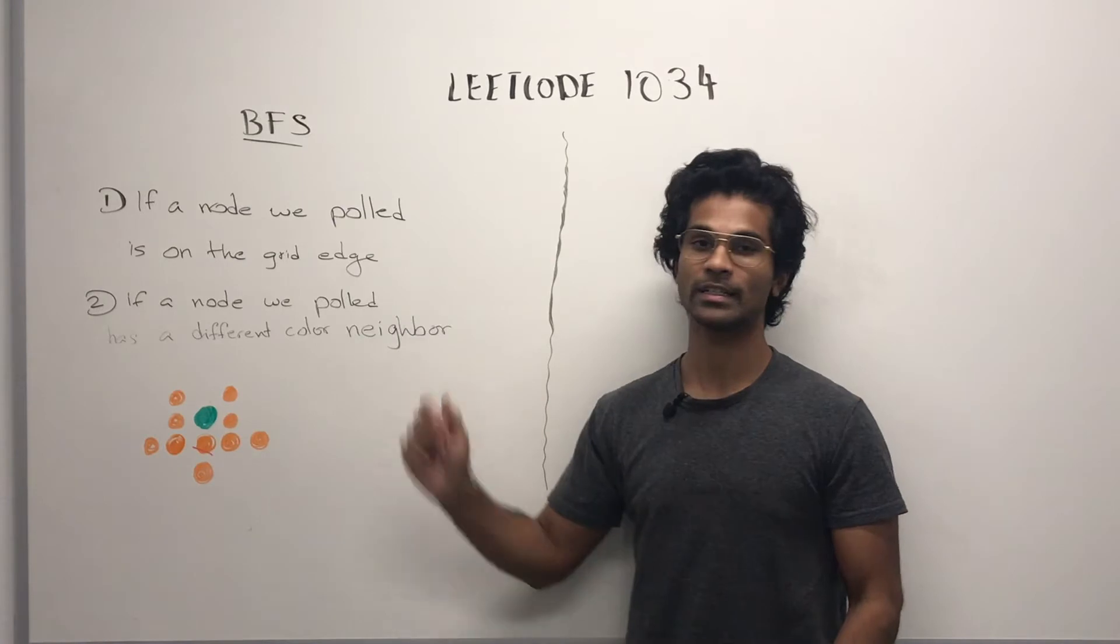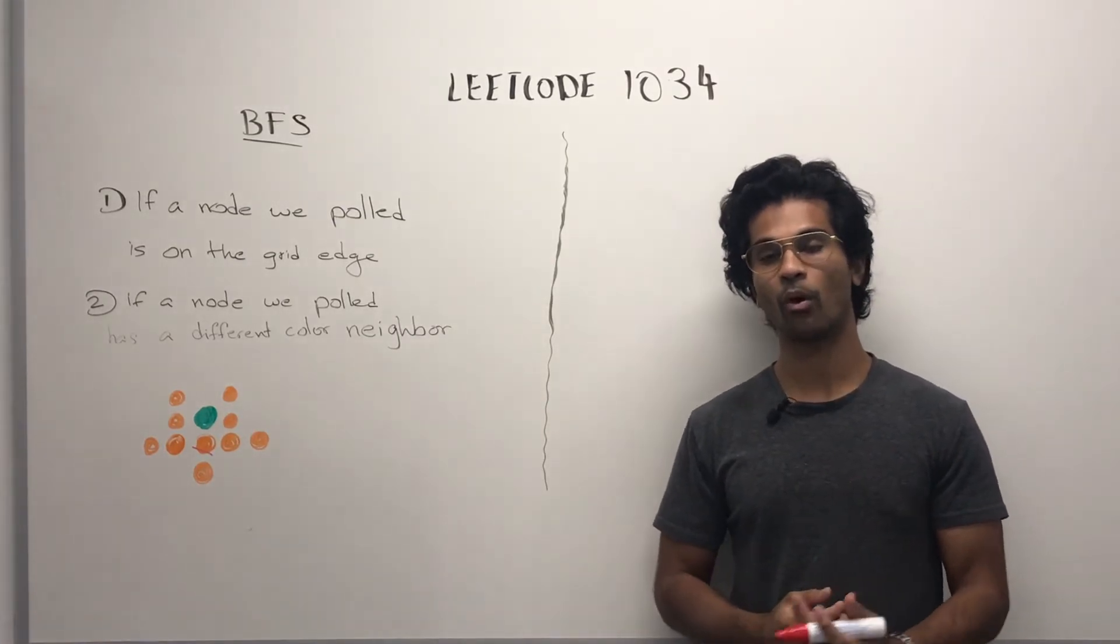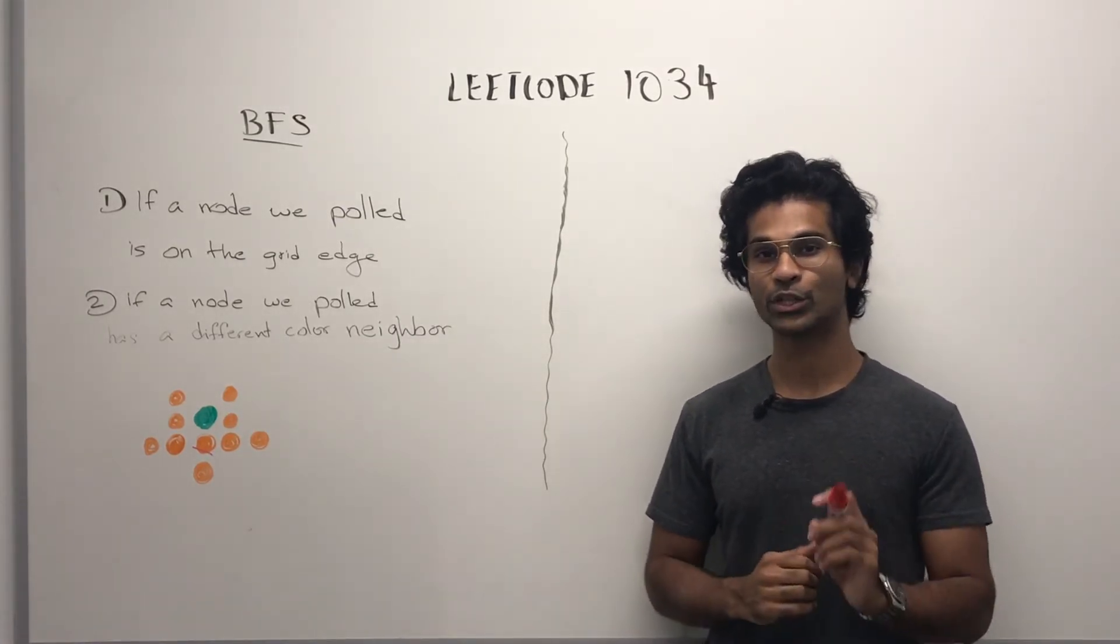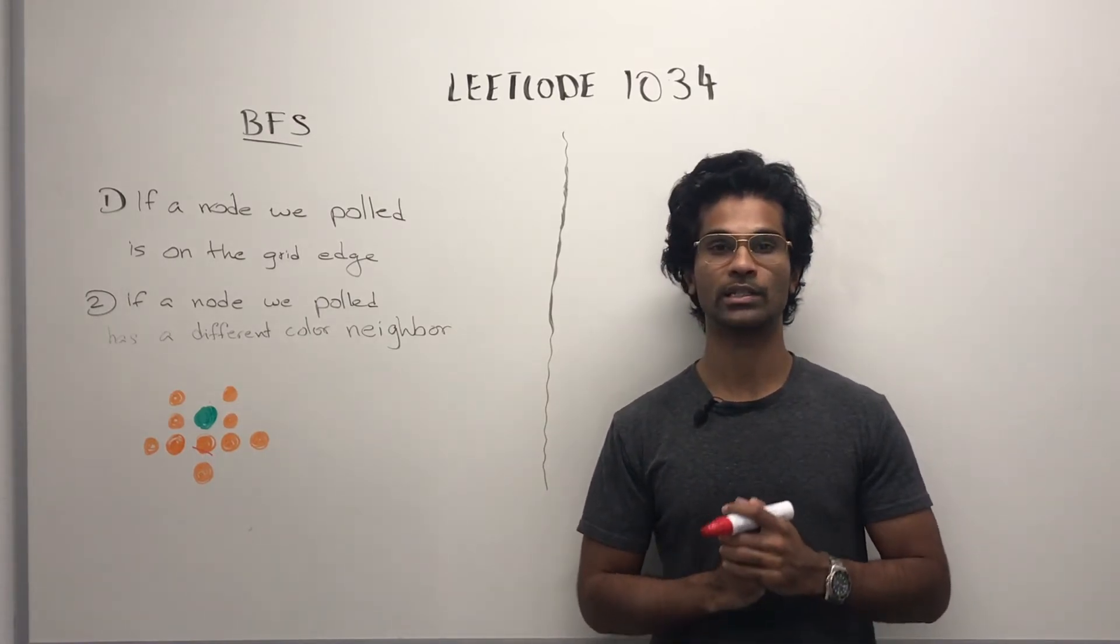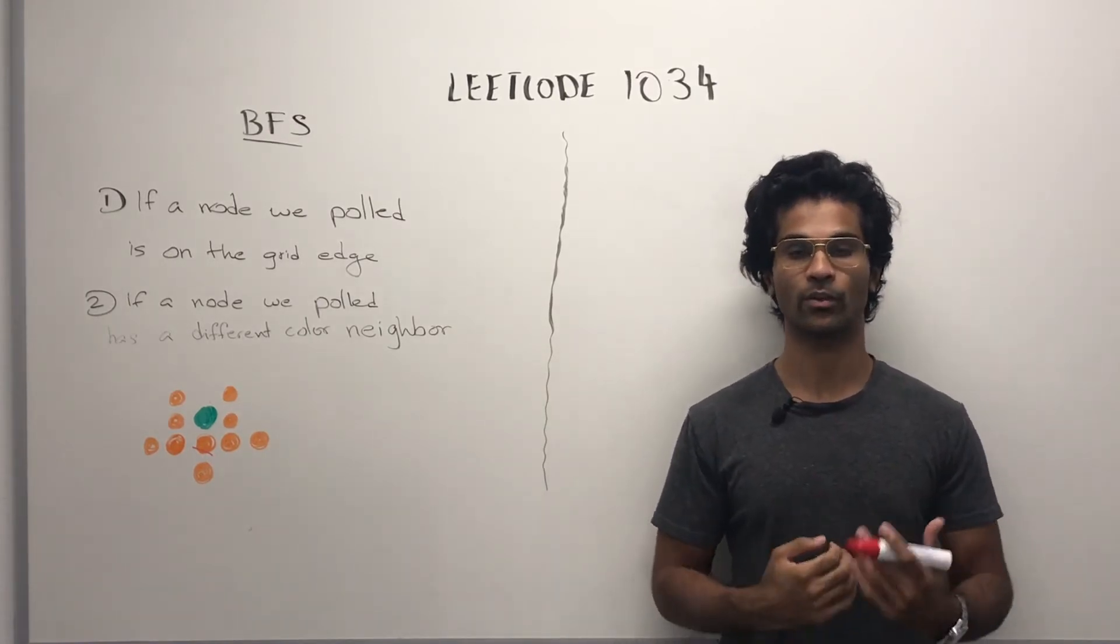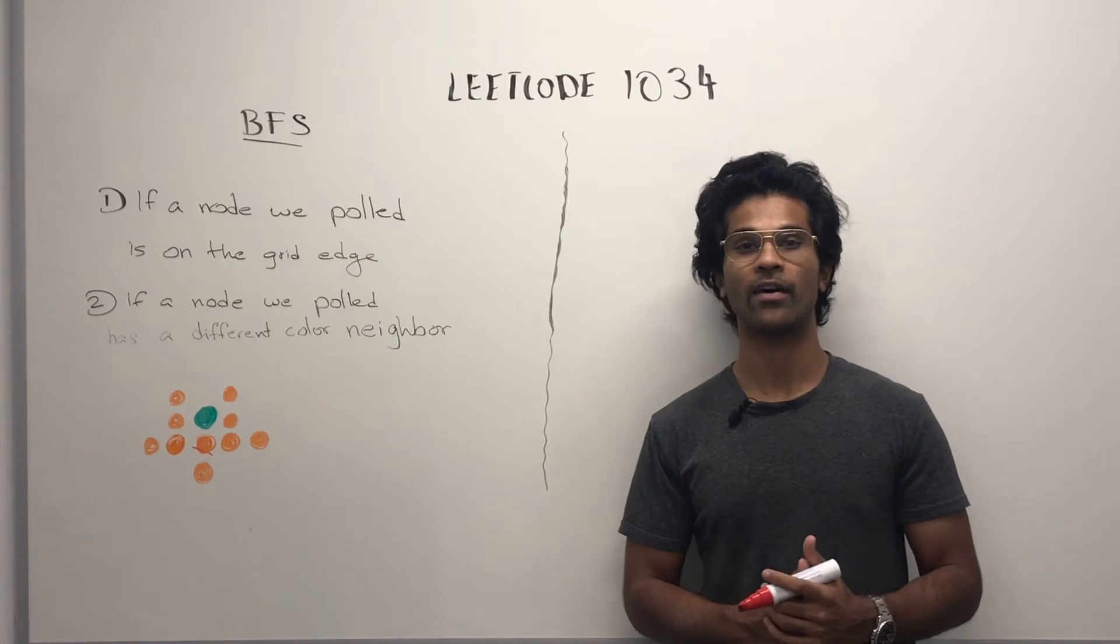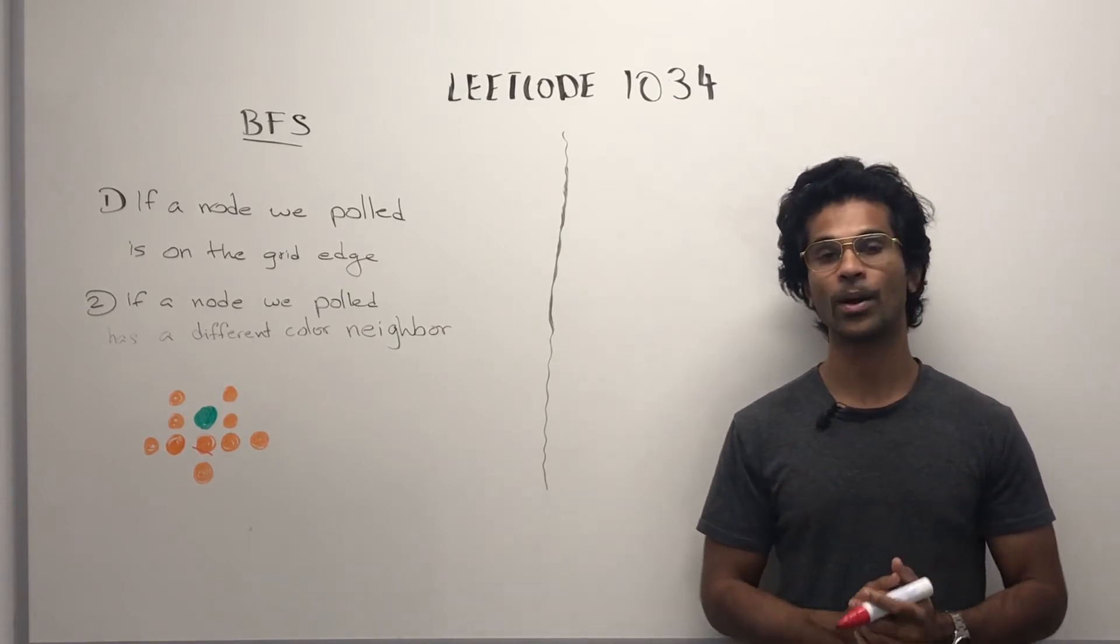We check for this condition right after we pull from the queue, and we check for this condition when we're checking a node's neighbors up, down, left, and right after we've verified that the neighbor has not been visited.